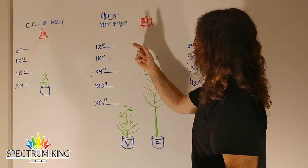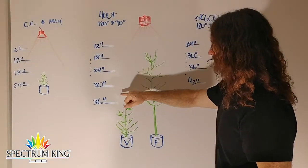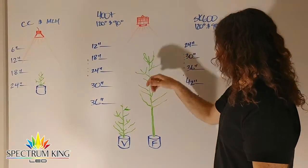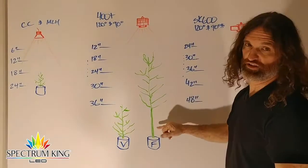In veg, your 400+ 120 is going to be 30 to 36 inches over the plant canopy. Your 400+ 90 degree reflector is going to be at least three feet over the canopy to start.